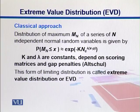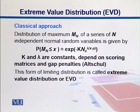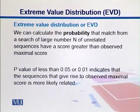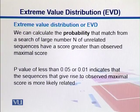This form of distribution is called the extreme value distribution or EVD. Remember the Z distribution, which we have already seen as a normal distribution — it has a similar shape or form. We calculate the probability that a match from a search of a large number n of unrelated sequences has a score greater than the observed maximal score.